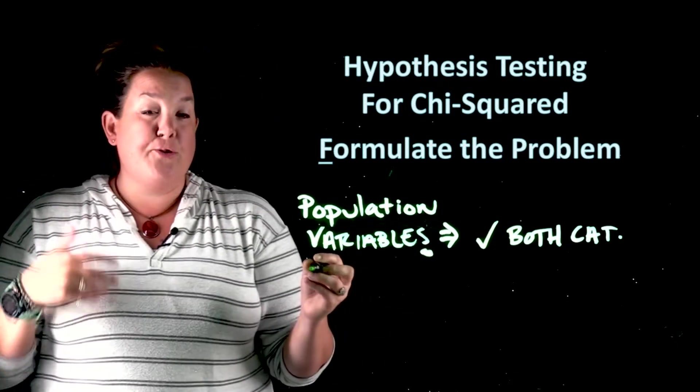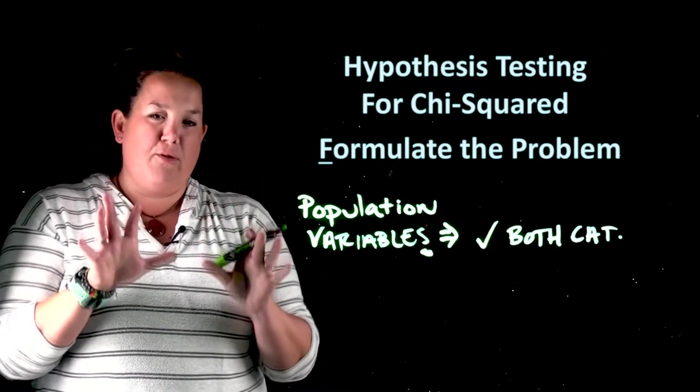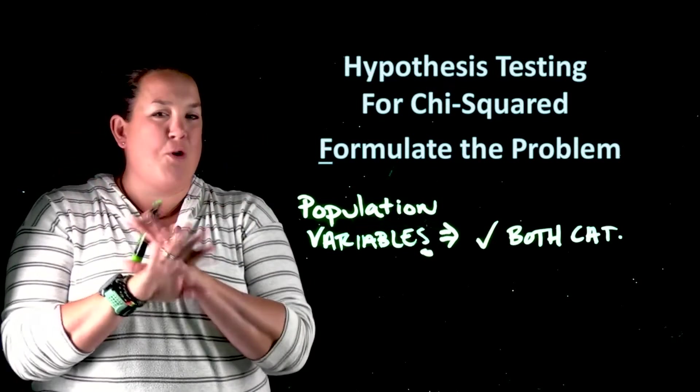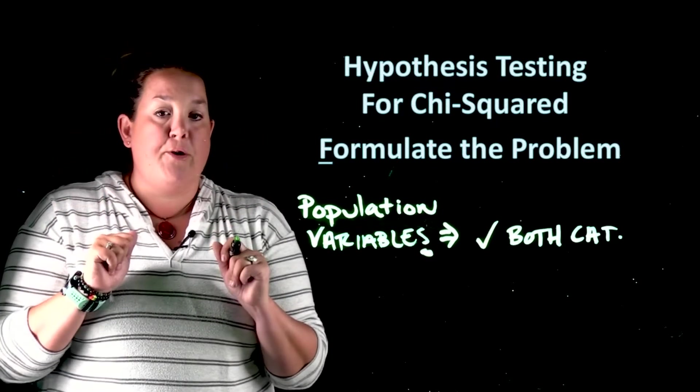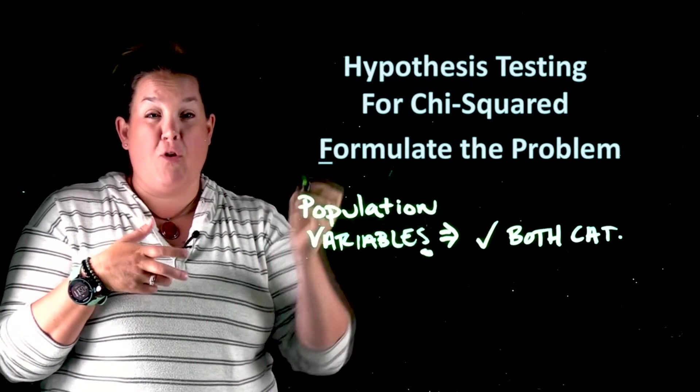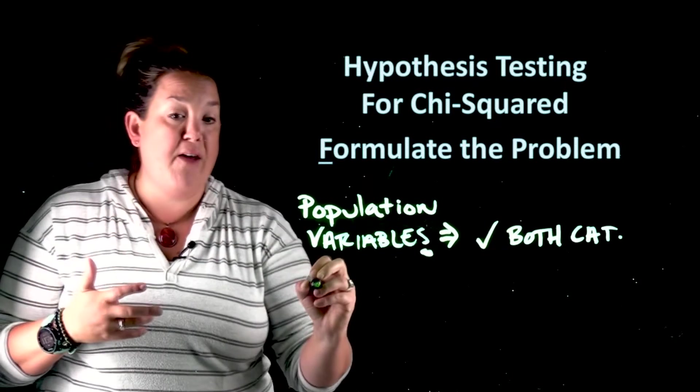Then the next thing you'll do, if it's appropriate, is to write the parameter of interest. Now, for these and for the type of information that we're providing with you in this series of videos, we're not going to talk about a parameter of interest. But we are going to move into the next part of our formulating the problem, which is new for us. We're going to write our null and alternative hypotheses.